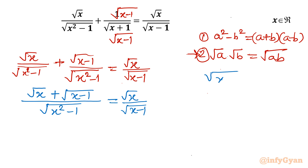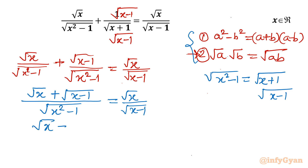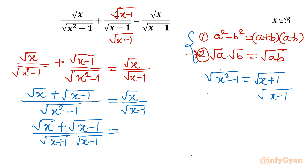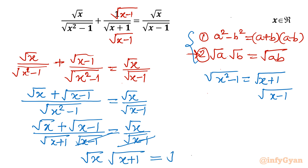Now square root(x²-1) can be written as square root(x+1) times square root(x-1). After cancelling square root(x-1) from the denominator on both sides, cross-multiplying gives: square root(x) times square root(x+1) equals square root(x) plus square root(x-1).